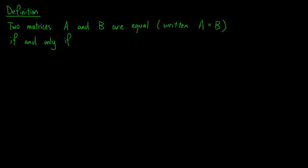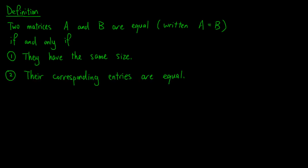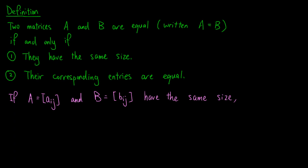Now, we want to know when two matrices A and B are equal. We say that they are equal, written as A equals B, if and only if they have the same size and their corresponding entries are equal. More precisely, if A is the matrix with entries Aij, and B is the matrix with entries Bij, and they have the same size, then A equals B if and only if Aij equals Bij for all i and j.